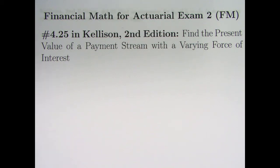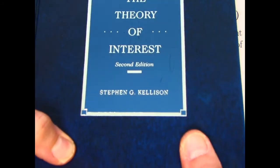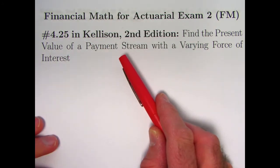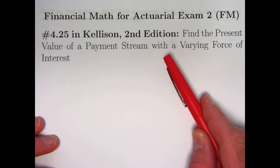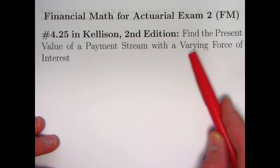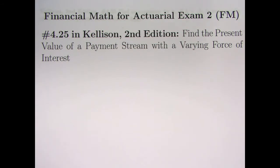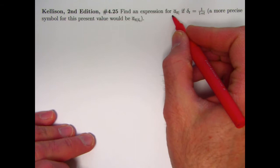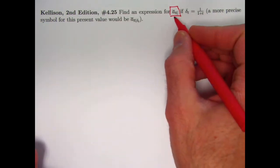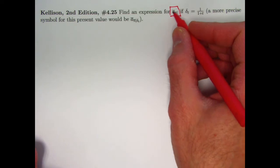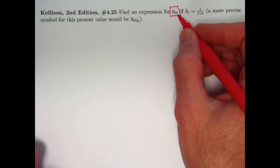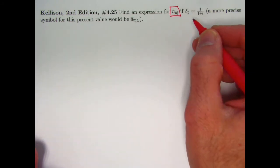In this video we will continue to look at problems about continuous annuities from Theory of Interest by Steven Kellison, second edition. We're going to be finding the present value of a payment stream or a continuous annuity, not with a constant force of interest like we usually do, but instead with a varying force of interest. Here's the problem: find an expression for the present value of a continuous annuity — the a-bar notation emphasizes it's a present value of a continuous annuity going on for n periods.